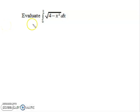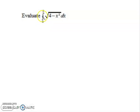Hello everyone, welcome to Vedantu. According to this question, we have to find out the integration of 4 under root 4 minus x square, and the limit is 0 to 2.